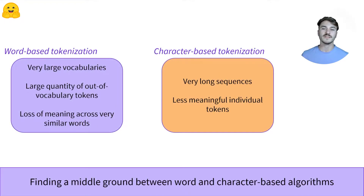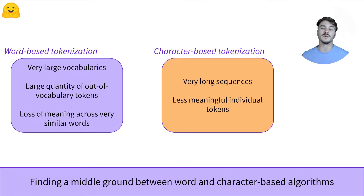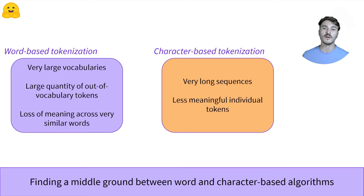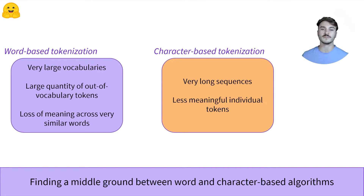Subword-based tokenization lies in between character-based and word-based tokenization algorithms. The idea is to find a middle ground between very large vocabularies, a large quantity of out-of-vocabulary tokens, and a loss of meaning across very similar words for word-based tokenizers, and very long sequences as well as less meaningful individual tokens for character-based tokenizers.